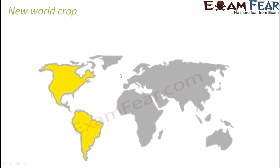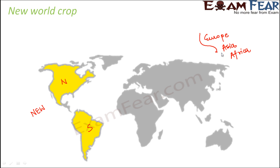What do we mean by new world crop and old world crop? Before we understand these categories, let's understand what is the new world and what is the old world. North America and South America together are termed as the new world, whereas continents like Europe, Asia, and Africa are together termed as the old world. The regions shown in grey refer to the old world and the regions in yellow refer to the new world.